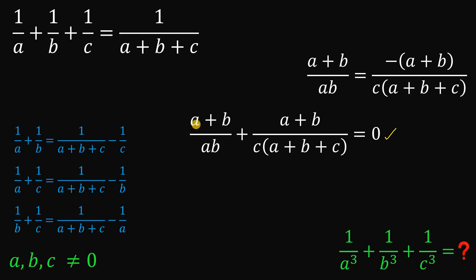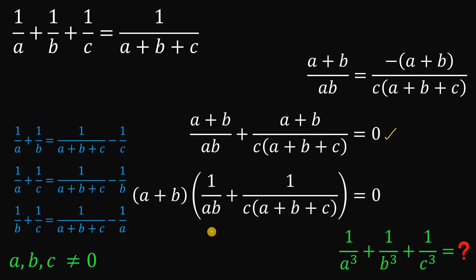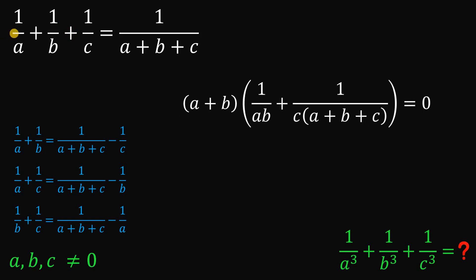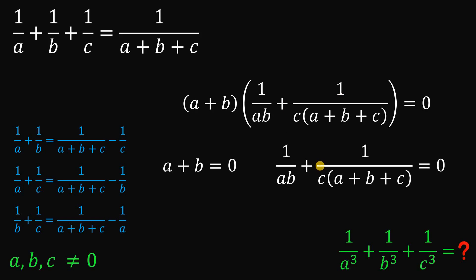Simplifying the numerator gives us negative of the quantity A plus B. Then we add the additive inverse of the right-hand side, giving us: A plus B over AB, plus A plus B over C times A plus B plus C, equals 0.